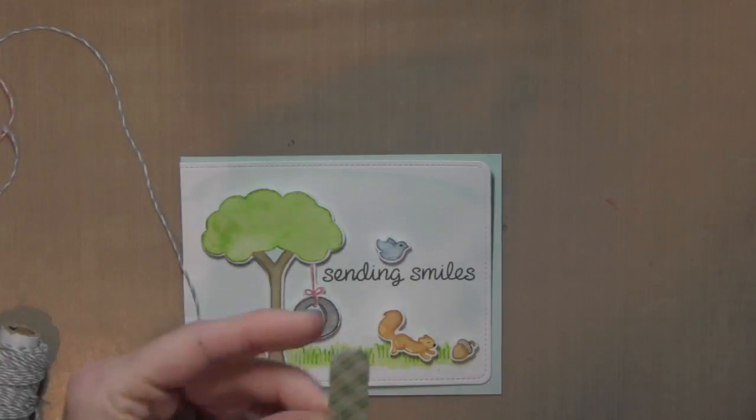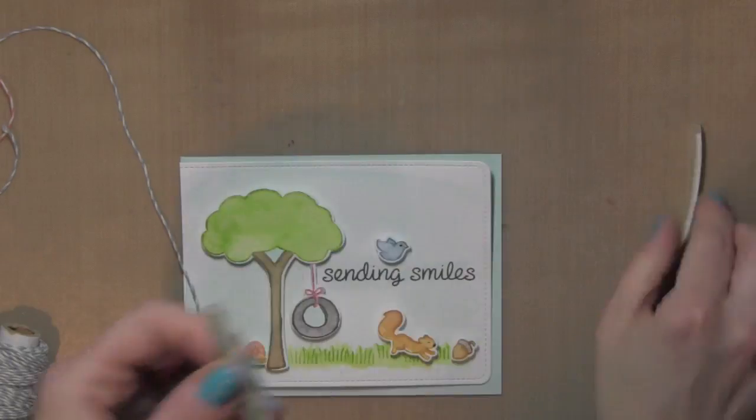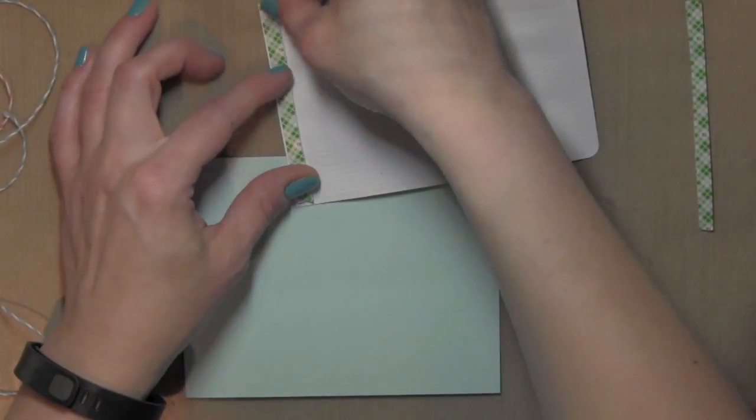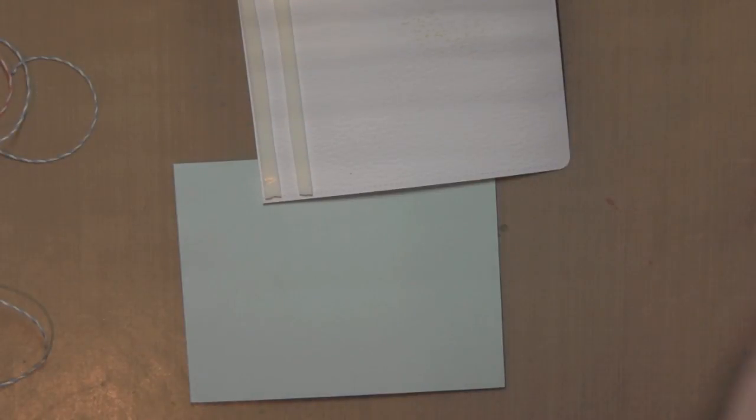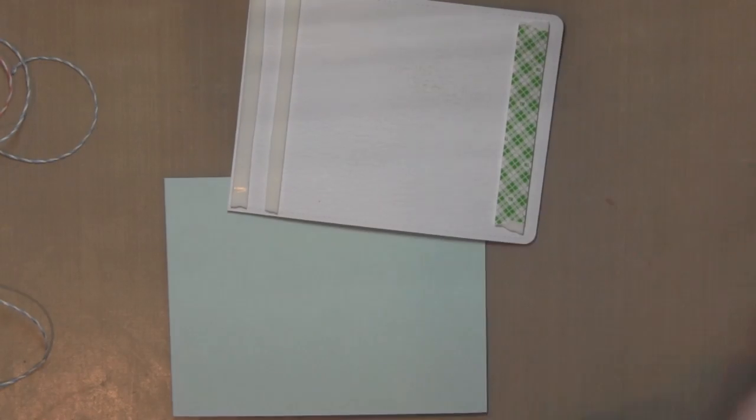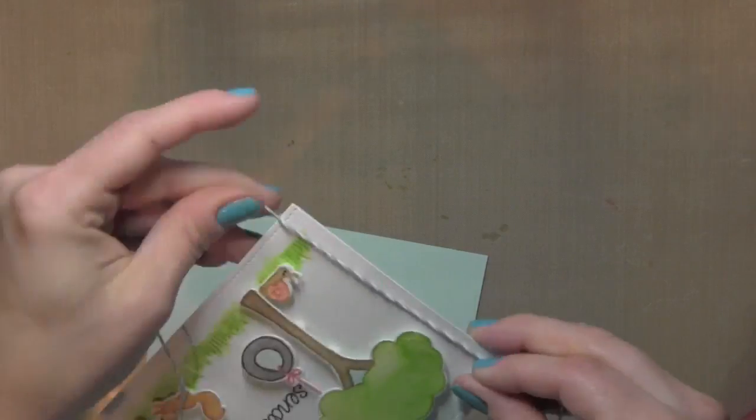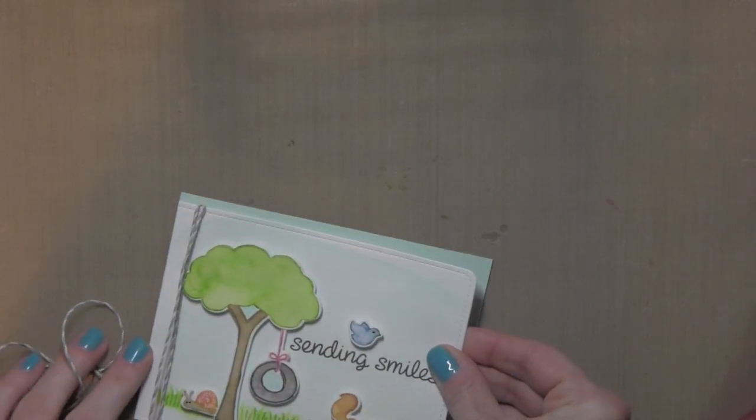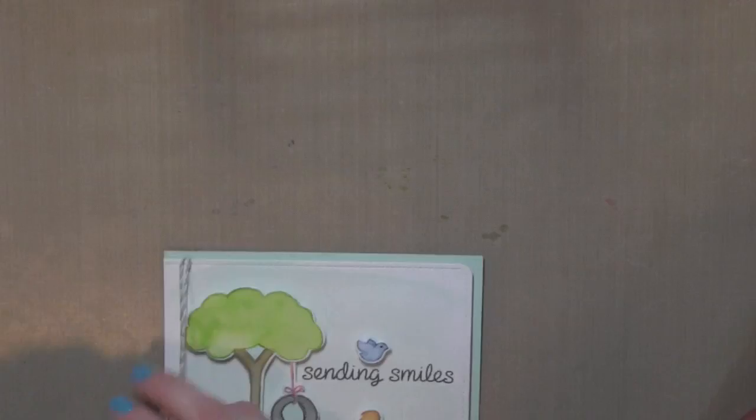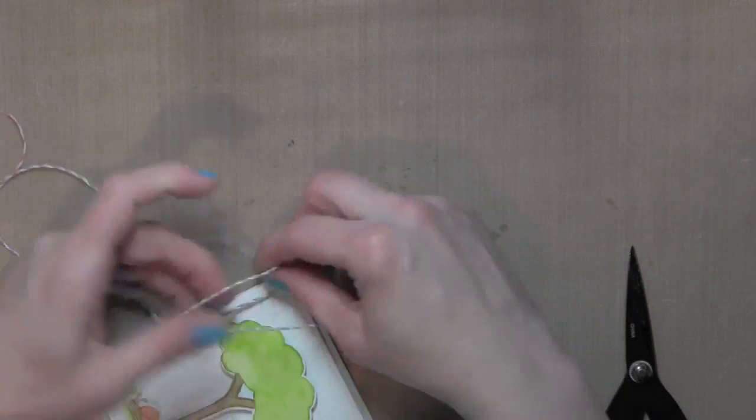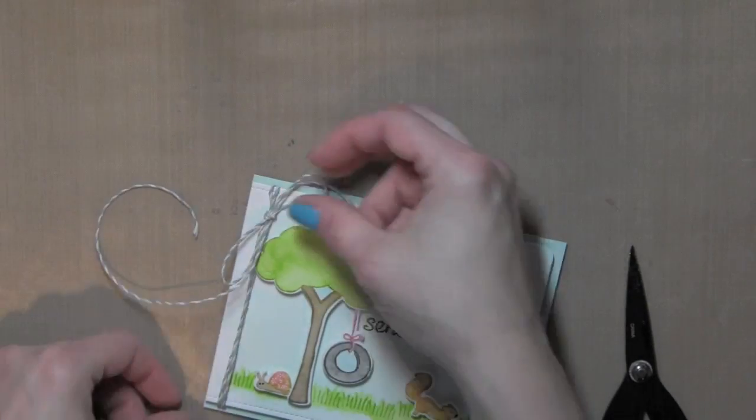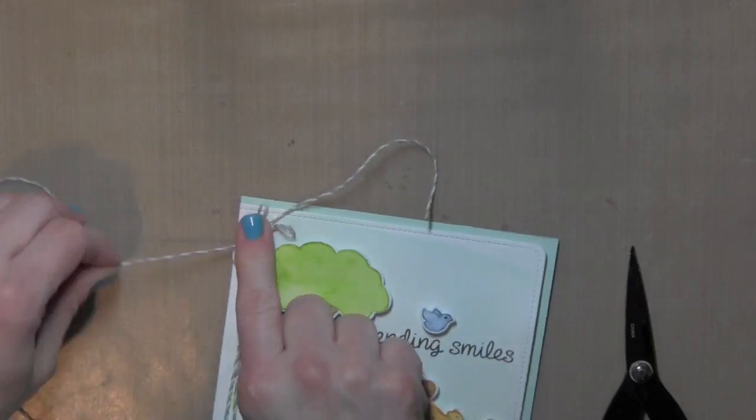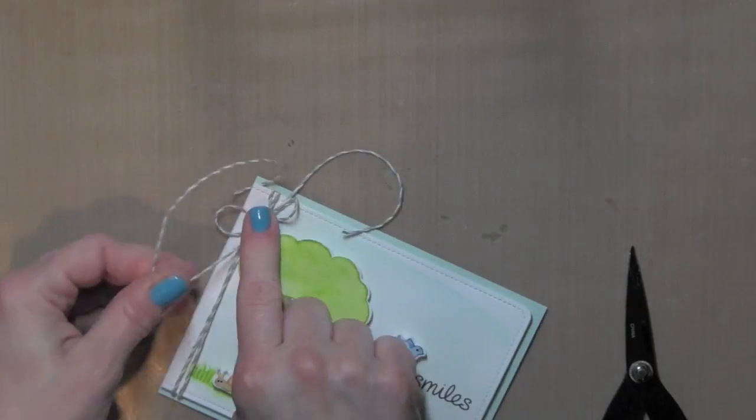Now, before I attach this water colored panel to my card, I'm going to use a couple of thin strips of foam adhesive. I actually cut it in half, leaving a little area in between. And I'll go ahead and add the rest of my adhesive. But that little area between those two thin strips is for my Lawn Fawn Trimmings twine. That will secure it in place so that it doesn't slide off the end of my card. Kind of gives it a nice little channel there to hold it in place. And then I'm going to tie it in a bow on the front.